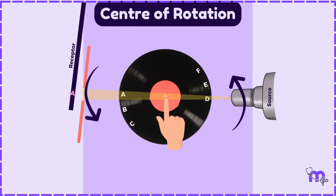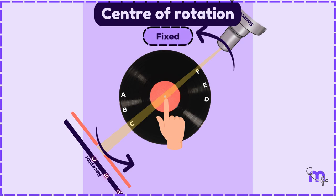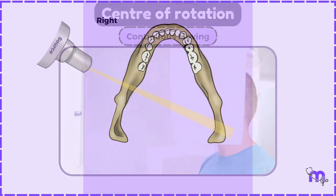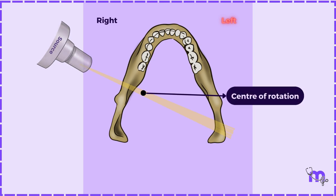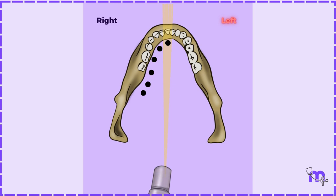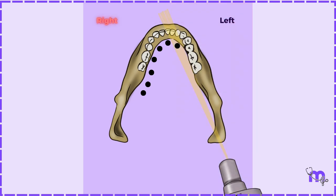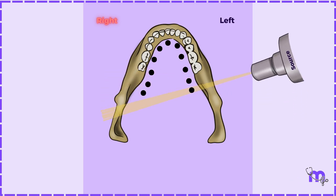Let us now discuss the center of rotation. While we studied the working principle of the panoramic machine, we noticed that the center of rotation remained fixed. But contemporary machines use a continuous moving center of rotation. If X-ray exposure begins from the left side of the arch, starting from the condyle and extending diagonally opposite, the center of rotation would be located on the posterior lingual aspect of the right side of the mandible. As the X-ray source rotates, the center of rotation shifts along the shape of the arch. Multiple centers of rotation form along the lingual sides until, after completing its rotation, a panoramic image is captured.